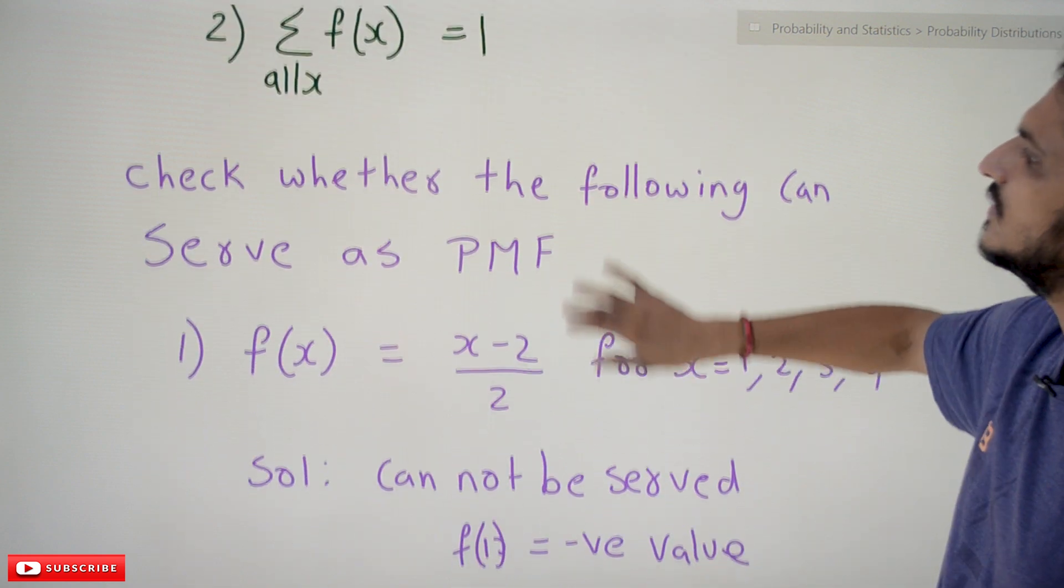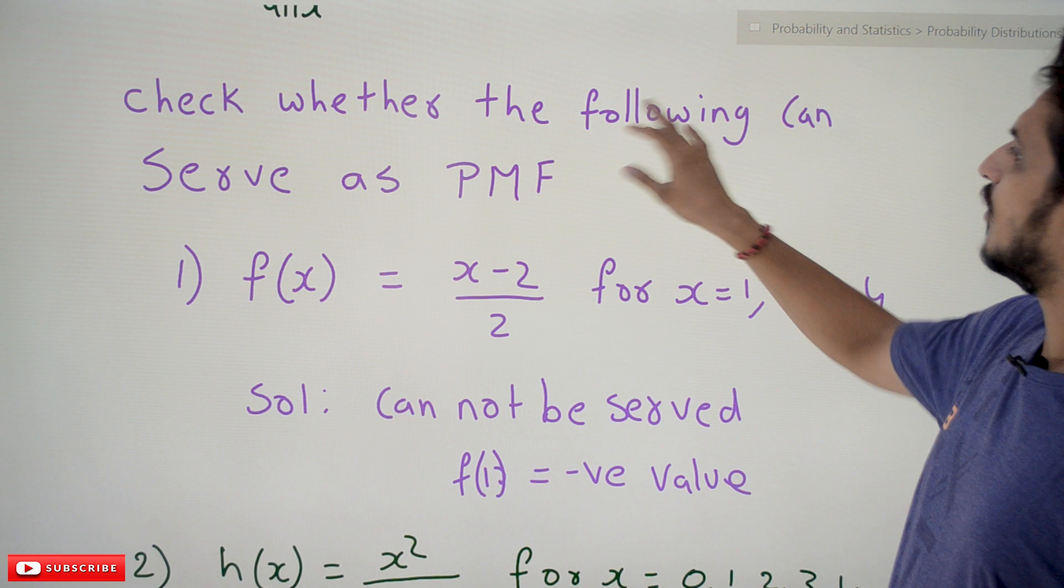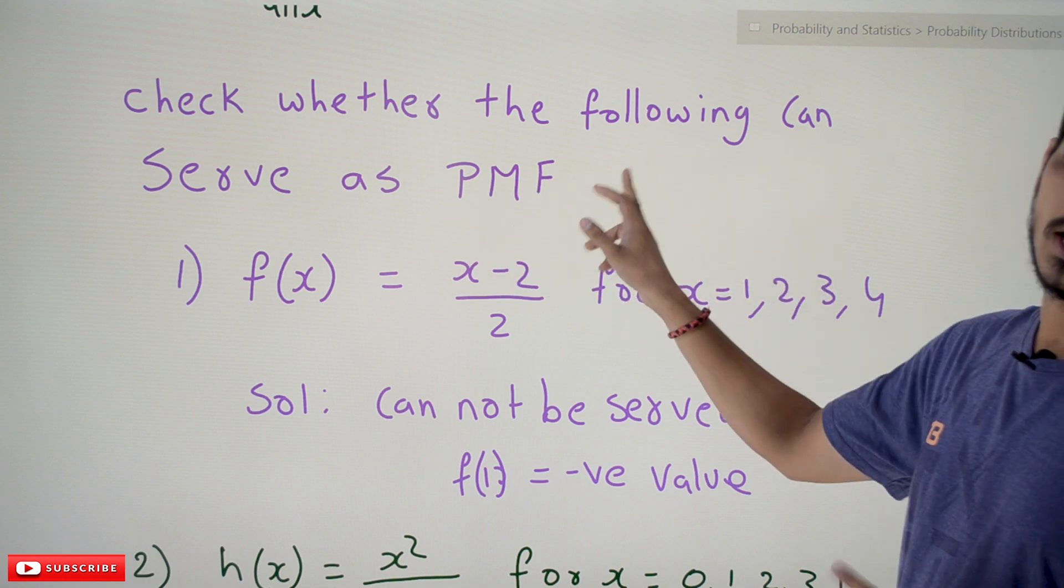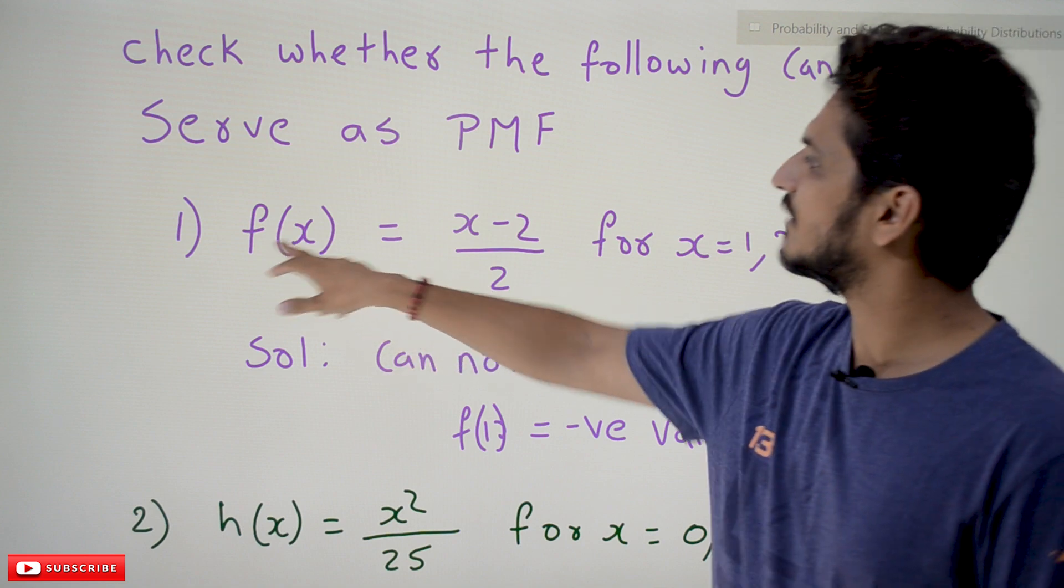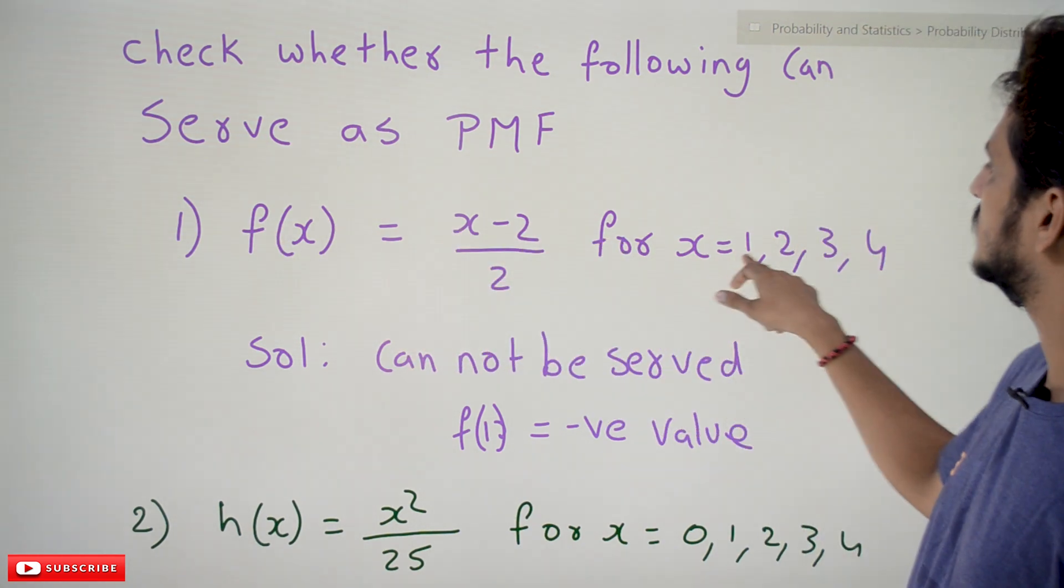Coming to the examples: Check whether the following can serve as probability mass functions or discrete probability function. Given first one is f(x) = (x-2)/2 for x = 1, 2, 3, 4 values.